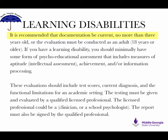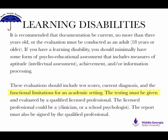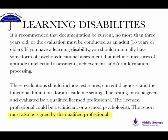Learning Disabilities: It is recommended that documentation be current, no more than 3 years old, or that the evaluation was conducted when the student was an adult, 18 years or older. If you have a learning disability, you should minimally have some form of psychoeducational assessment that includes measures of aptitude, intellectual assessment, achievement, and/or information processing. These evaluations should include test scores, current diagnosis, and the functional limitations for an academic setting. The testing must be given and evaluated by a qualified licensed professional, such as a clinician or school psychologist, and the report must be signed by that qualified professional.